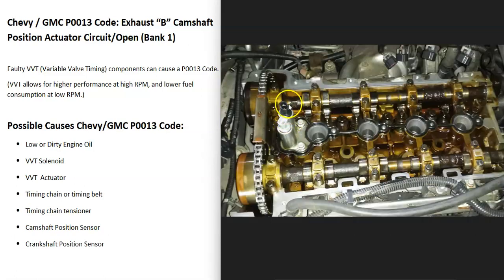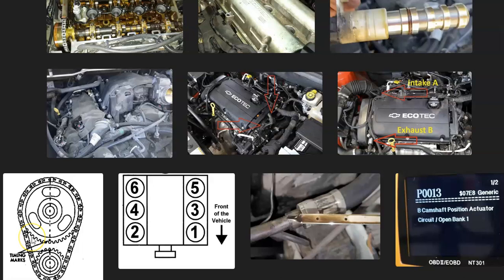The most common issues are wiring problems going to the exhaust solenoid or old and dirty engine oil clogging it up. These solenoids work with the actuators — the components the timing chain rides on at the top of the engine. Actuators don't usually fail, but they can, so if everything else checks out, keep that in mind. That's a basic overview of the Chevy or GMC P0013 code. If you have anything to add, comment below; if you have questions, ask and I'll try to answer them.